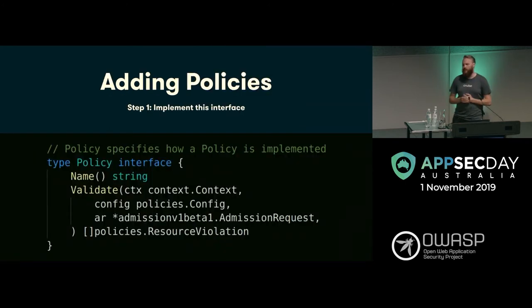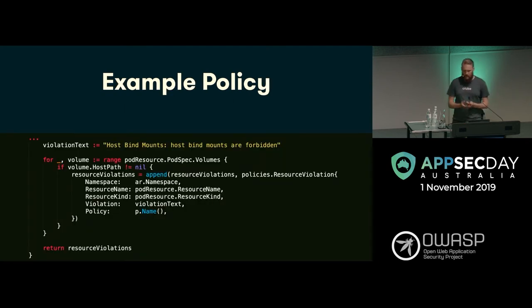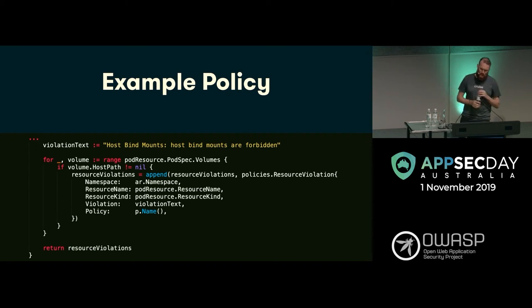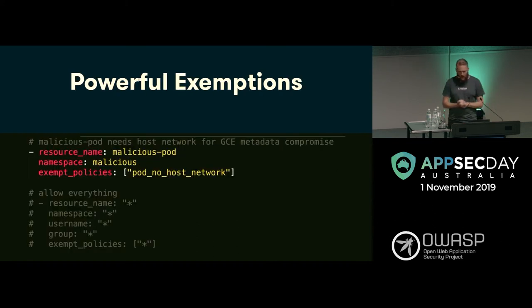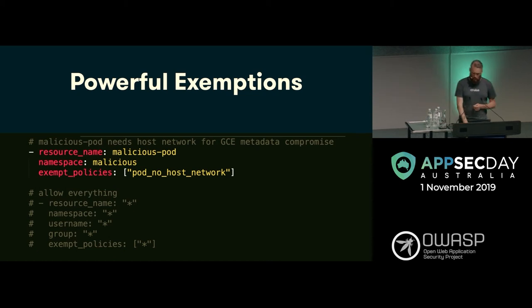How do you actually add a policy? We mentioned ease of extensibility — you just need to fill out this interface. It's all written in Golang and it's pretty straightforward. This one here is the host bind mount — you append to the resource violation, you have the different namespace, the kind, et cetera. If you want to add other policies, it's pretty straightforward. The exemptions factor as well — pretty easy to add exemptions. If you're saying we normally don't want things to be routable from the internet, but this particular one should have an ingress, you add it. Pretty straightforward even for people who aren't devs.